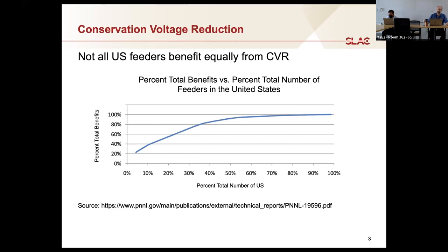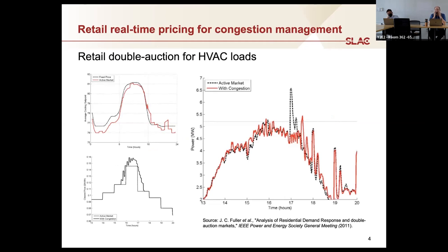We found that some feeders CVR is very effective, others not so much. The cumulative distribution showed that if we implemented CVR on about 35% of feeders we might get 80% of the benefits. That was an important insight for utilities, which now typically use this kind of modeling — combining a good load model and network model — to determine whether voltage reduction will actually result in energy savings.